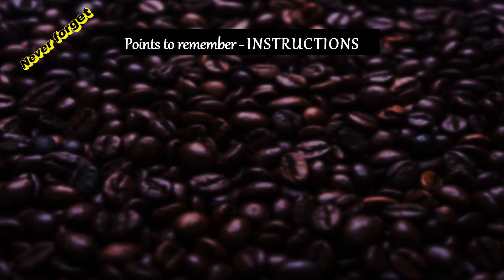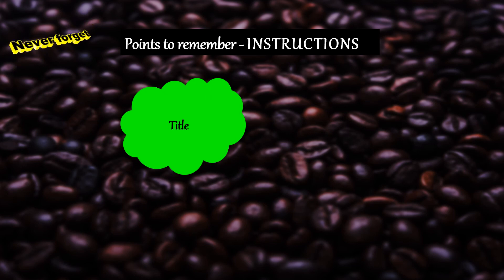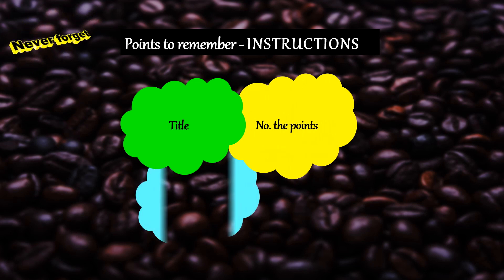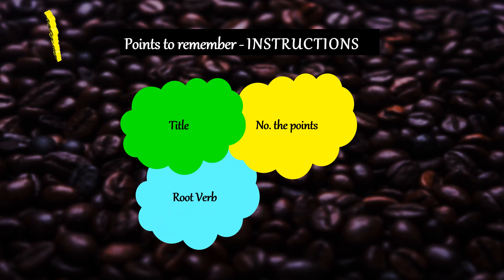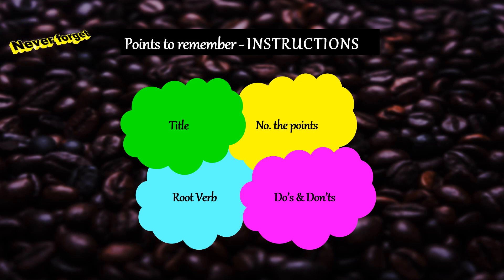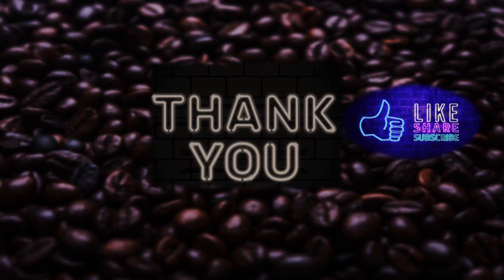What are the points to remember while writing instructions? A specific and precise title, which means the title should carry the word 'instructions.' Don't forget to number your points — do not use bullets. Begin each statement with a root verb. For your convenience, if they say write a set of eight instructions, divide them into four plus four — that is four do's and four don'ts: what you should do, four points, and what you should not do, the remaining four points. This is how you write instructions.